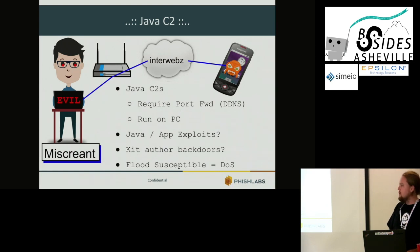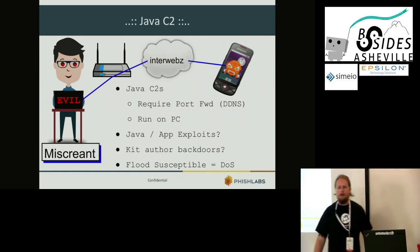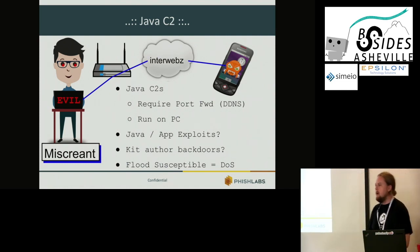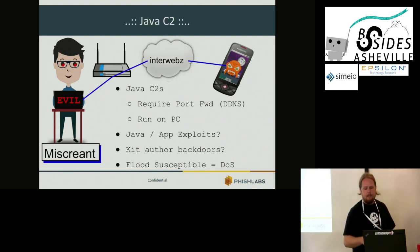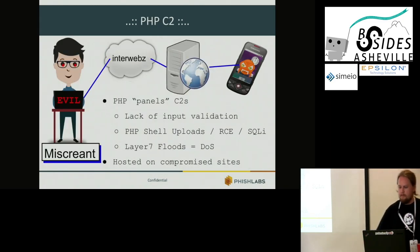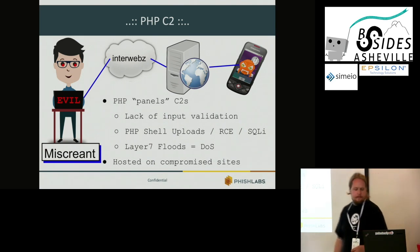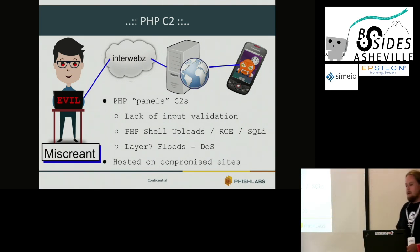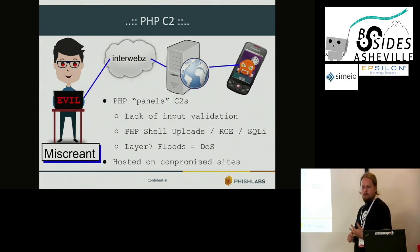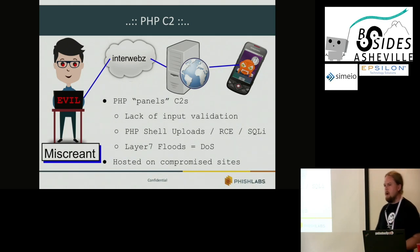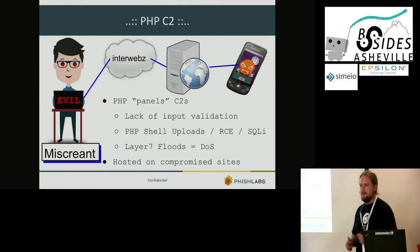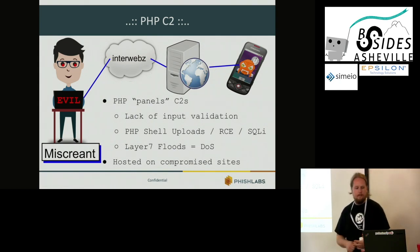There are websites and hack forums — semi-underground — where these families have been leaked. A lot of the RATs you see there are backdoored by the people releasing them for free. One of the huge issues with the Java C2 hosted on a PC is that it's extremely flood-susceptible. For the PHP C2 panels, one of the huge issues is lack of input validation — everything from SQL injection, shell upload, remote and local file inclusion. Being hosted on scarce resources on a compromised site or VPS, they're also susceptible to layer-seven flooding or HTTP flooding.